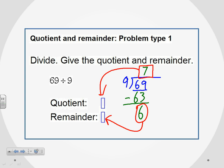So 7 was our quotient, and 6 is our remainder.